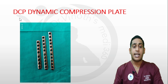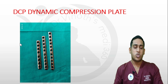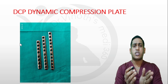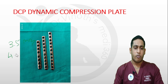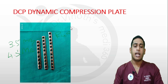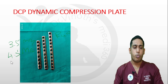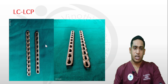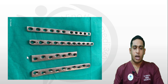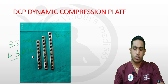Now the different types of plates: the Dynamic Compression Plate (DCP) is mainly used to provide compression at the fracture site. It is available in 3.5 mm sizes — used for radius, ulna, and fibular fractures — and 4.5 mm sizes, used for humeral shaft fractures, tibial shaft fractures, and femoral shaft fractures.